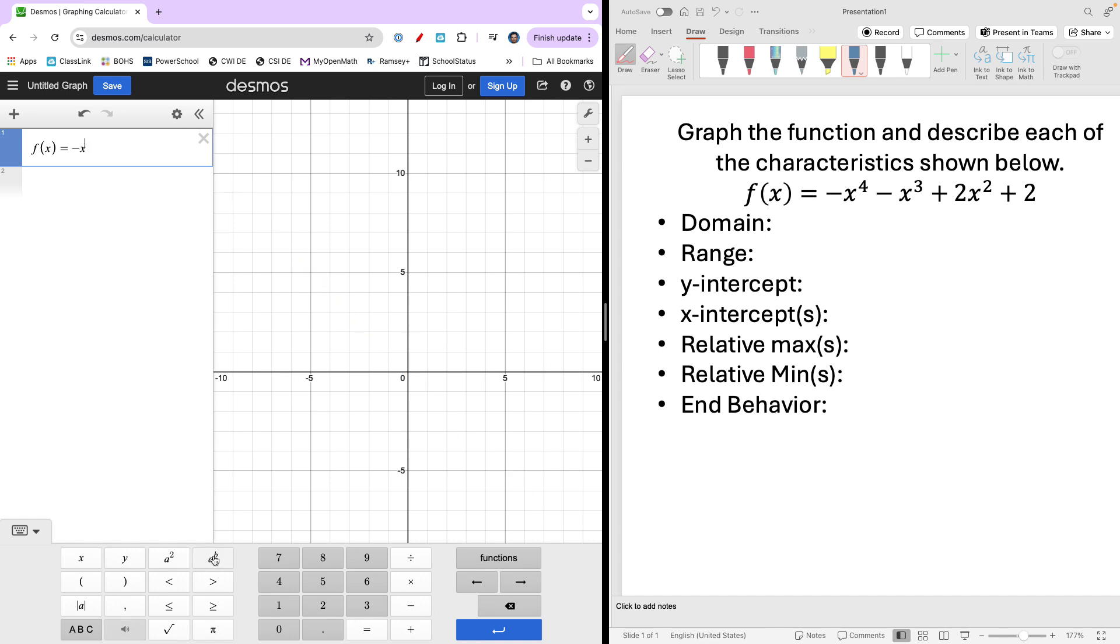Negative x, and we want an exponent, so we're going to raise that to the fourth. Hit my right arrow to come back down, minus x cubed. Type my exponents. Plus 2x squared plus 2.